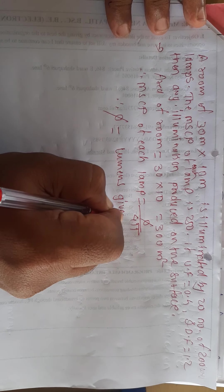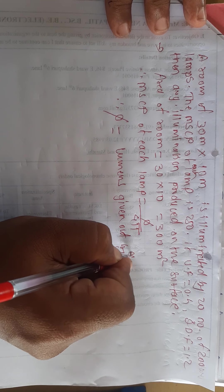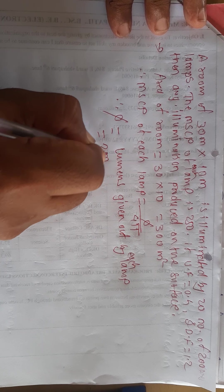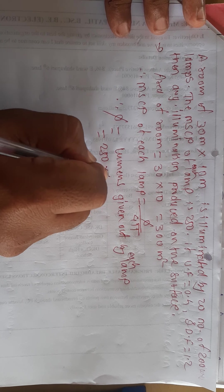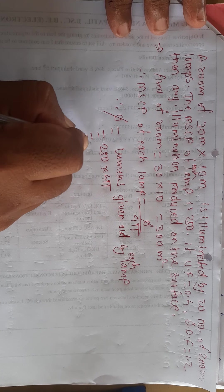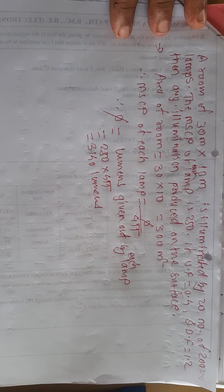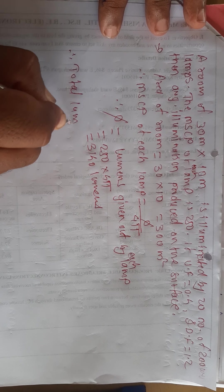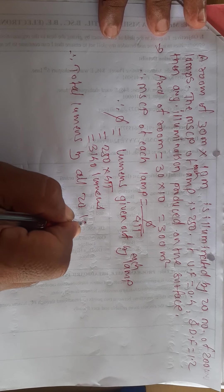Lumens given out by each lamp: 250 into 4π lumens. Therefore, total lumens by all 20 lamps, which is equal to 62,800 lumens.